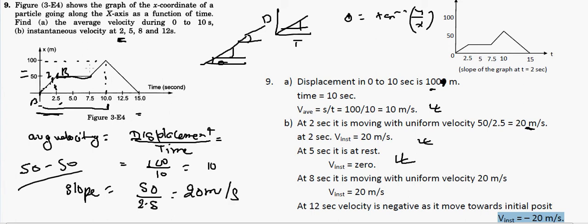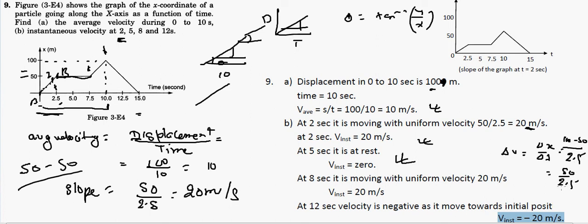For t = 8 seconds, it lies between 7.5 and 10 seconds on a straight line segment. Using the same slope concept: the displacement at t = 10 is 100 m and at t = 7.5 is 50 m, so the change is 100 minus 50 = 50 meters over 2.5 seconds. This gives 50 divided by 2.5 = 20 m/s. The instantaneous velocity at t = 8 seconds is 20 m/s.